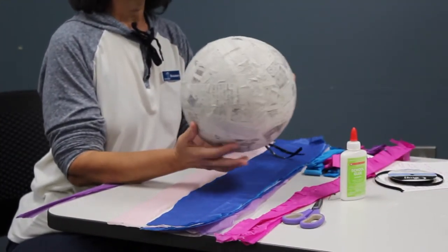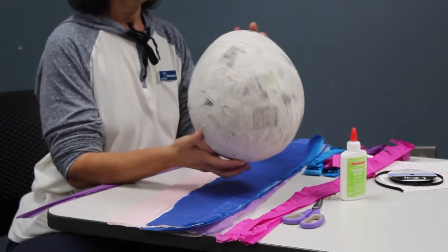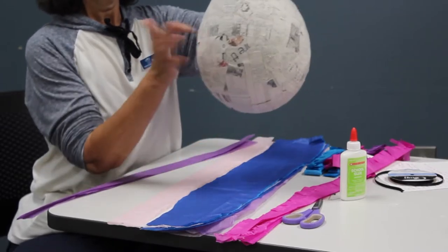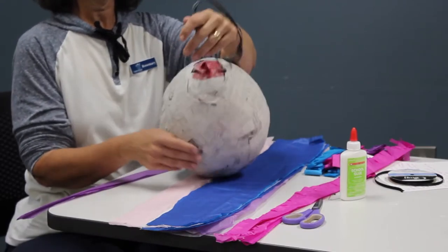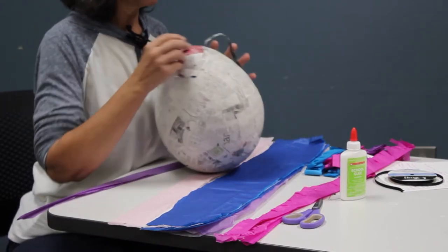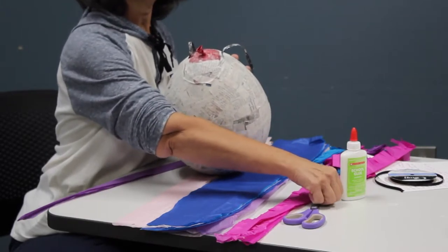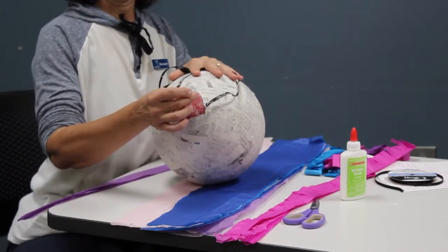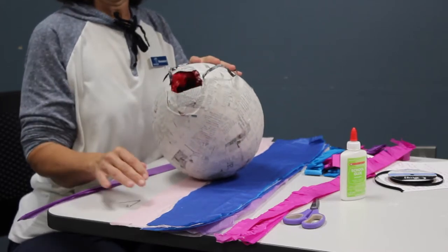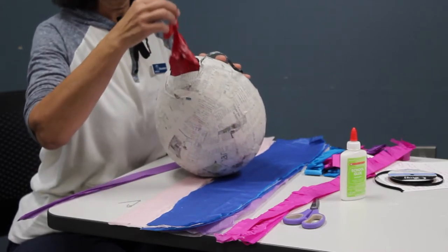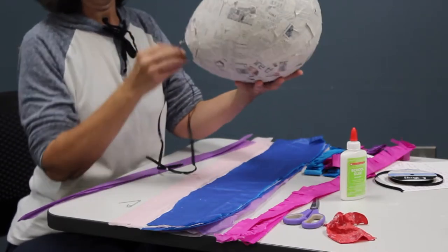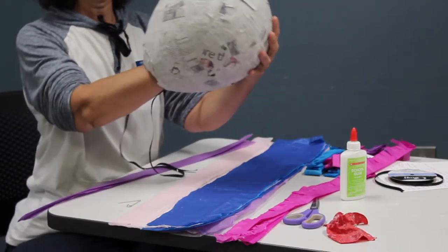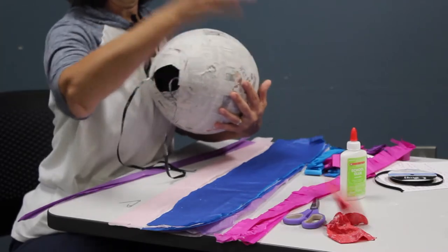So now we've put the second coat on the balloon, and it's pretty sturdy and dry. So the very next step is to pop the balloon. Here we go. And then just remove all of the balloon parts.